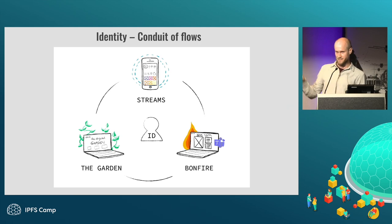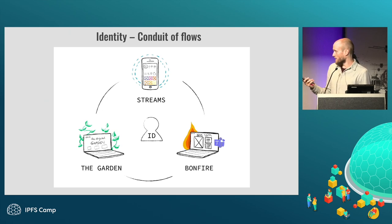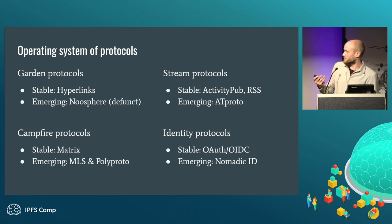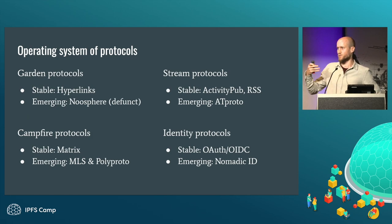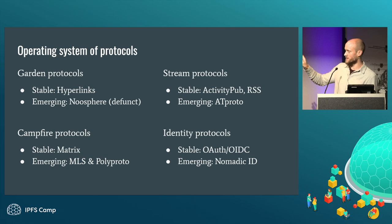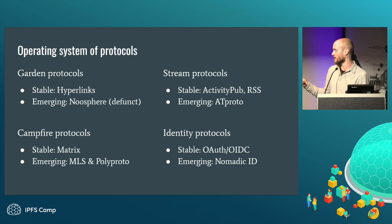In the middle of these three different flows of communication, we have identity. Identity is really the conduit that sits in the middle of them, because you bring your identity into all of these in order to interact with others. That's why I'm referring to this as an operating system — an operating system of protocols. If we want to be interoperable, protocols are the way to do it. The world now looks quite promising: we have many already very stable protocols we can build upon, as well as emerging protocols that are showing a lot of promise.